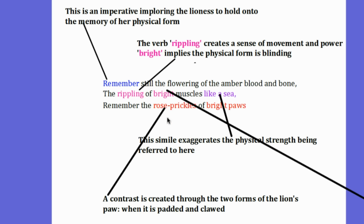And finally, the phrase rose prickles of bright pores creates a contrast through the two forms of the lion's paw, when it's padded and when it's clawed. So in short, the lion is telling the lioness to remember her physical form, her paws, the bright muscles of the physical form. Because this will not last, as the poem continues and tells us.